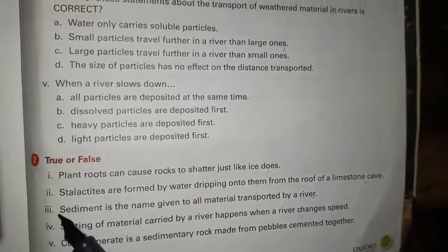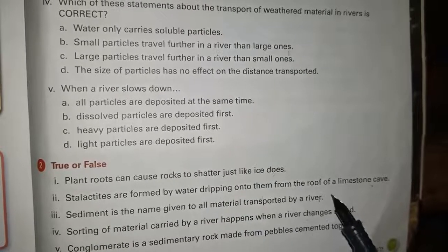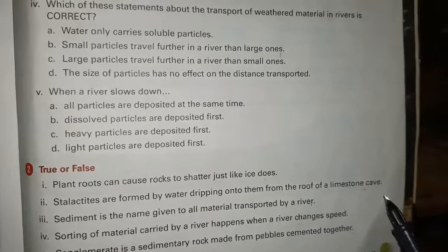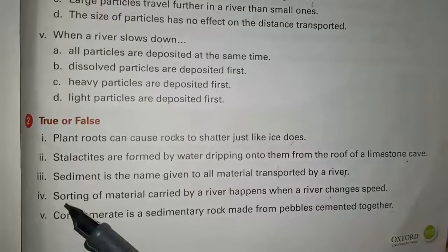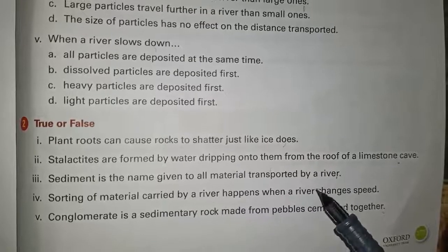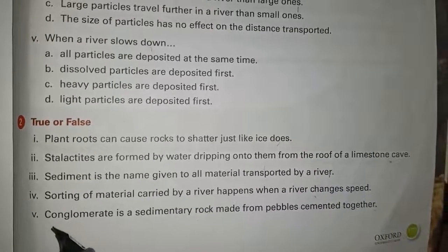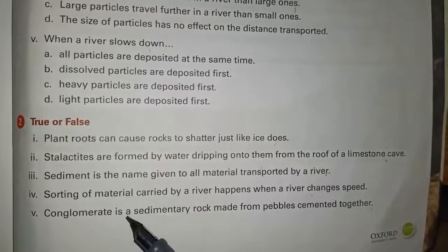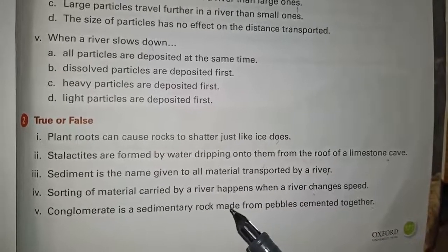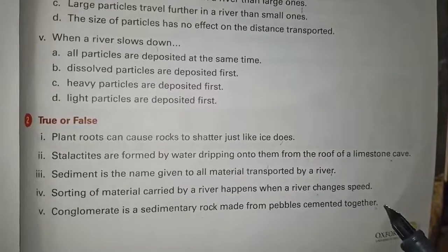Statement number 2: stalactites are formed by water dripping onto them from the roof of a limestone cave. This is a false statement. Statement number 3: sediment is the name given to all material transported by a river. This is a true statement. Statement number 4: sorting of material carried by a river happens when a river changes speed. This is a true statement.